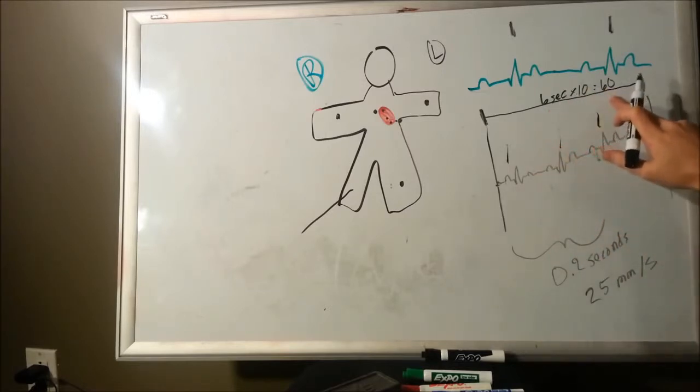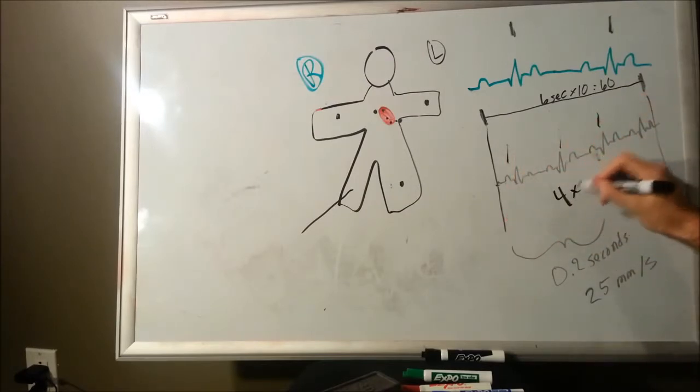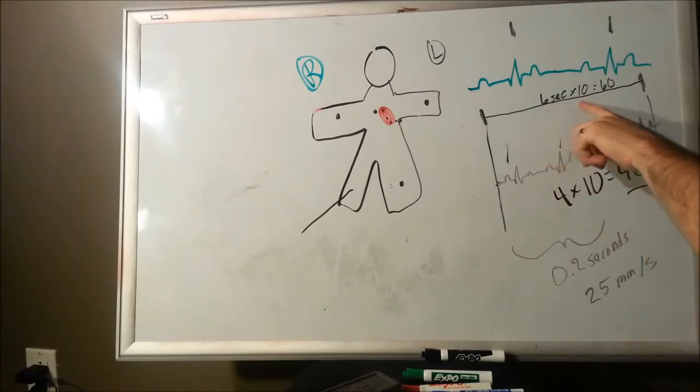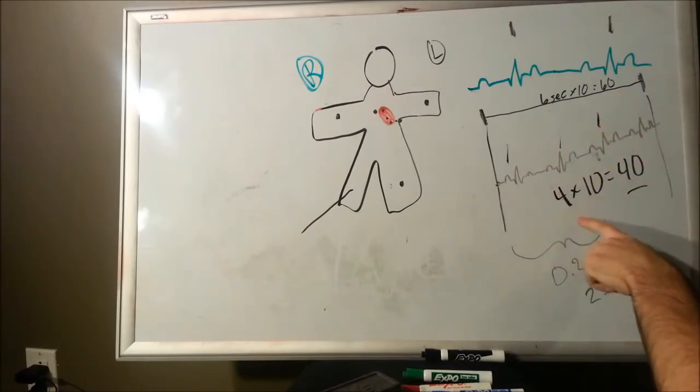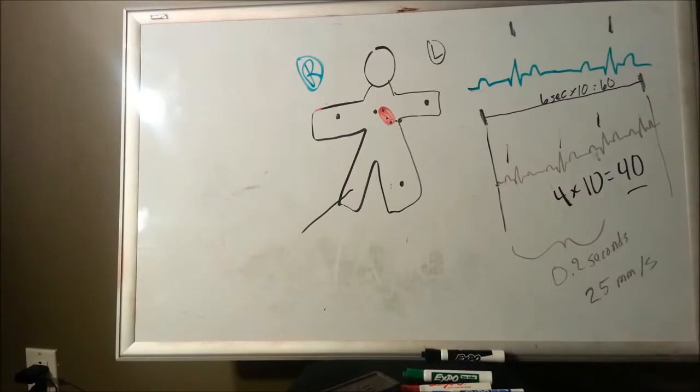Well, I get four beats in that six seconds. Since I times that by ten to get a minute, I'm going to times four. So, four times ten equals 40. That's 40 beats per minute. So in this EKG tracing, I have four beats within six seconds. If you can take that a little further, six seconds times ten is a minute. So you just take everything that was in that six seconds times ten, and that's how many beats you have within that minute. So this heart rate tracing is going to be 40 beats per minute.